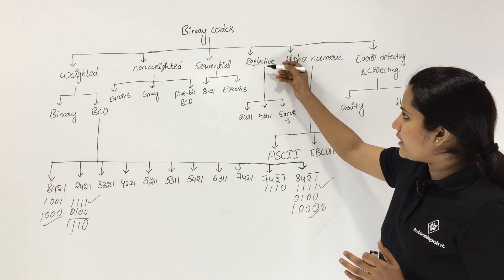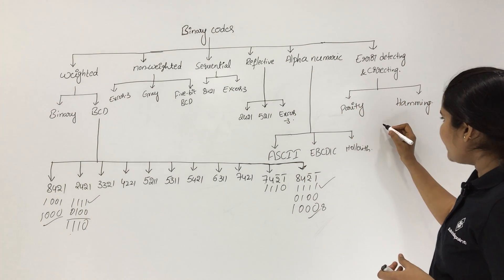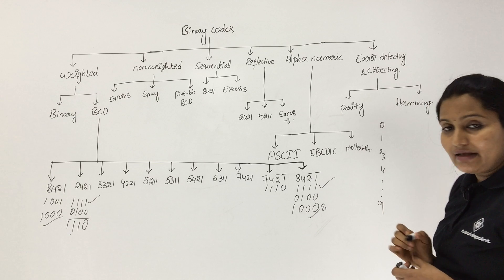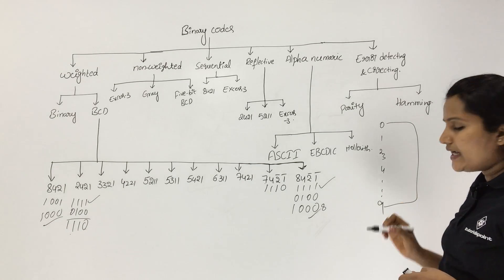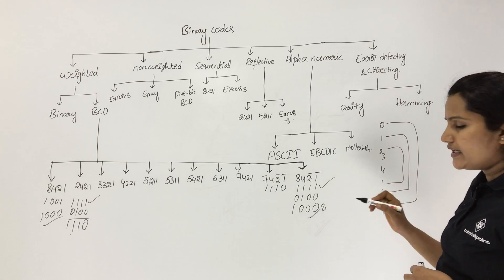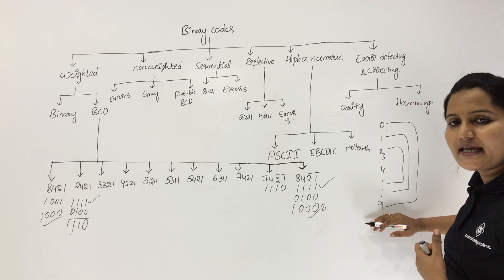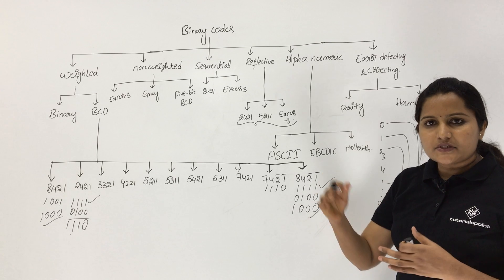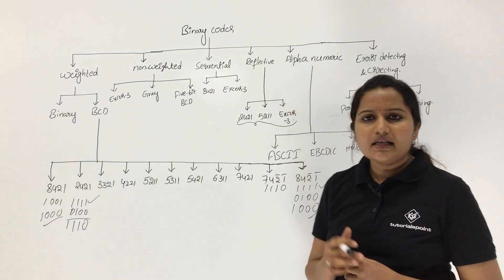Reflective code means: if you write binary for 0 through 9, and 0's binary is the complement of 9's binary, 1's binary is the complement of 8's binary, and 2's binary is the complement of 7's binary, then that code is called a reflective code. You can observe the 2421 code and compare the binary values at 0's place and 9's place to understand reflective codes clearly.